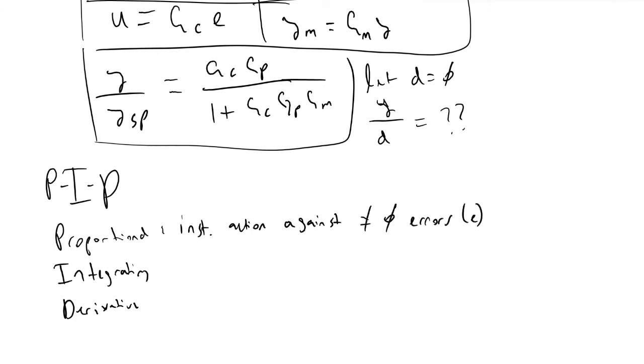E. And a key drawback to P only control is that they can't handle sustained disturbances or set point changes.